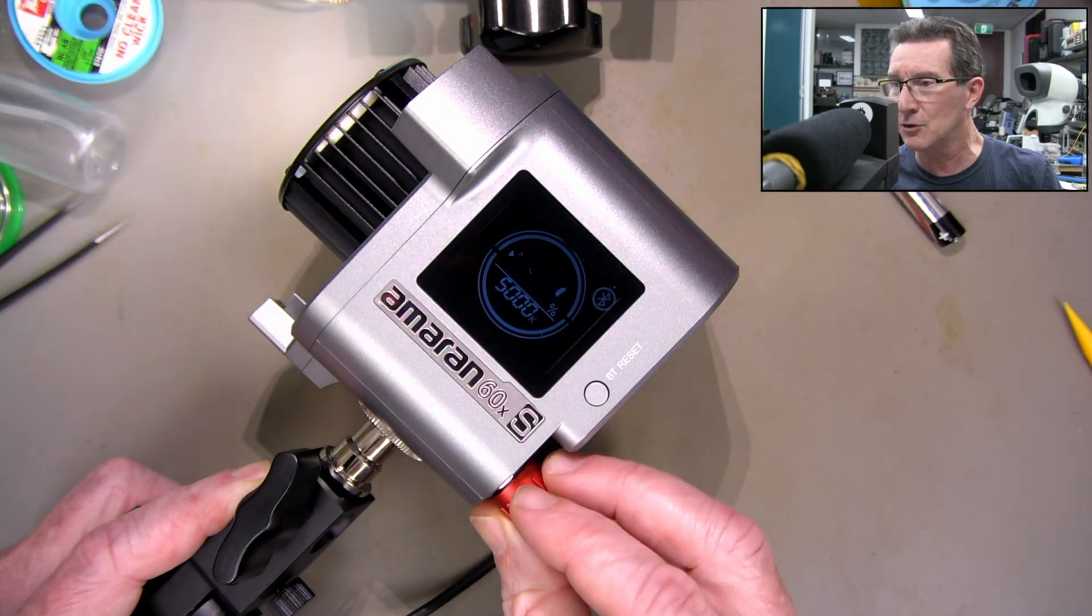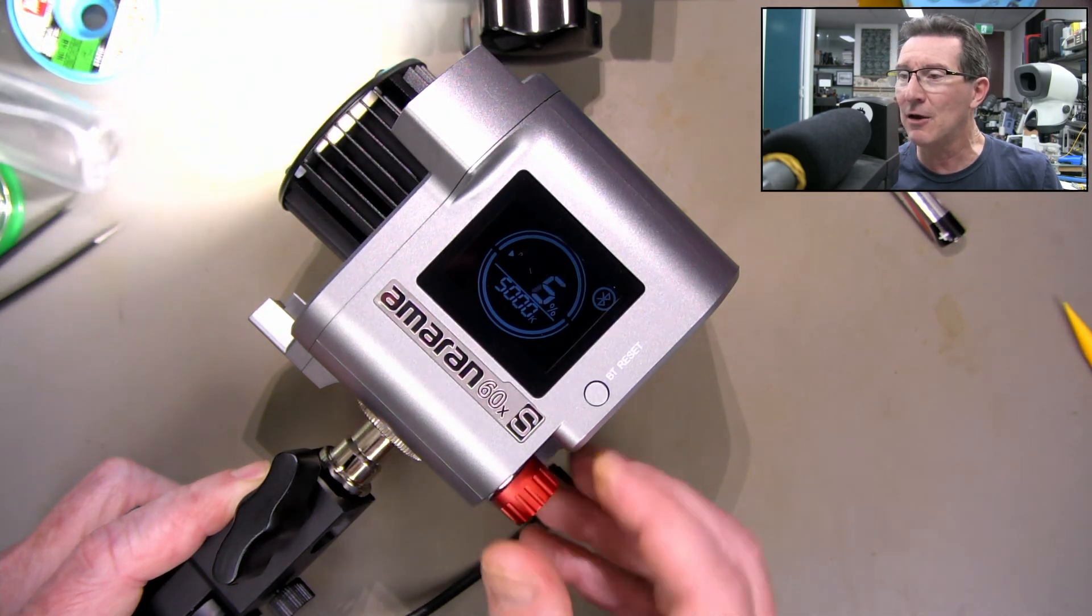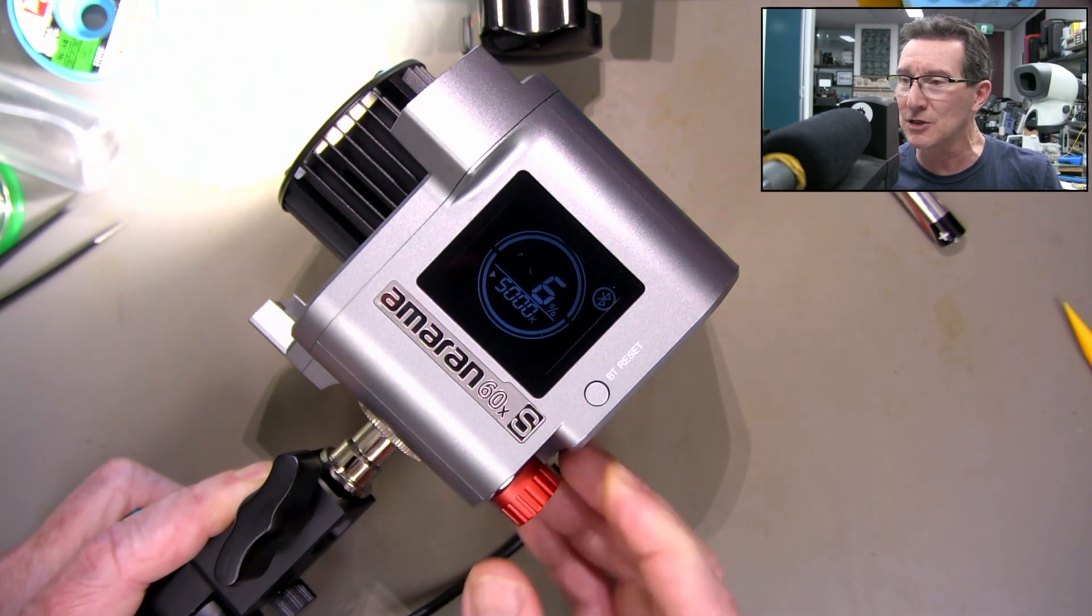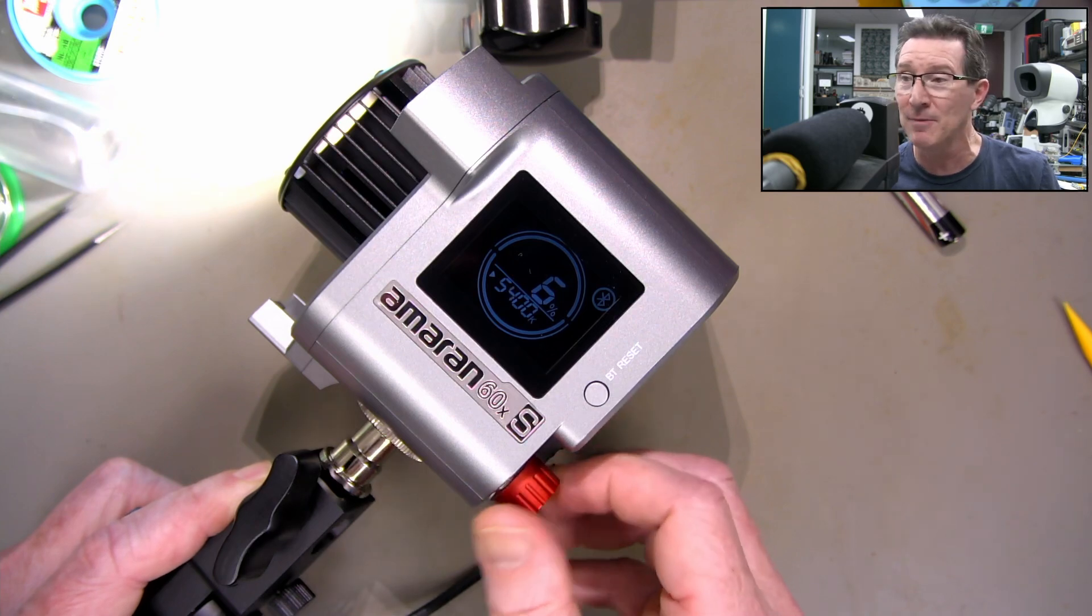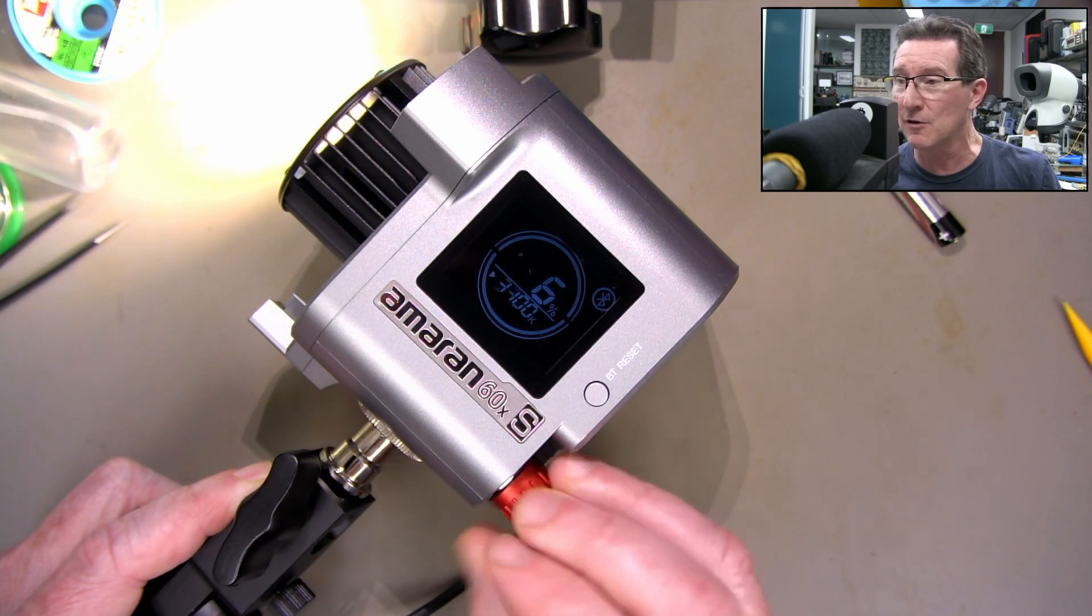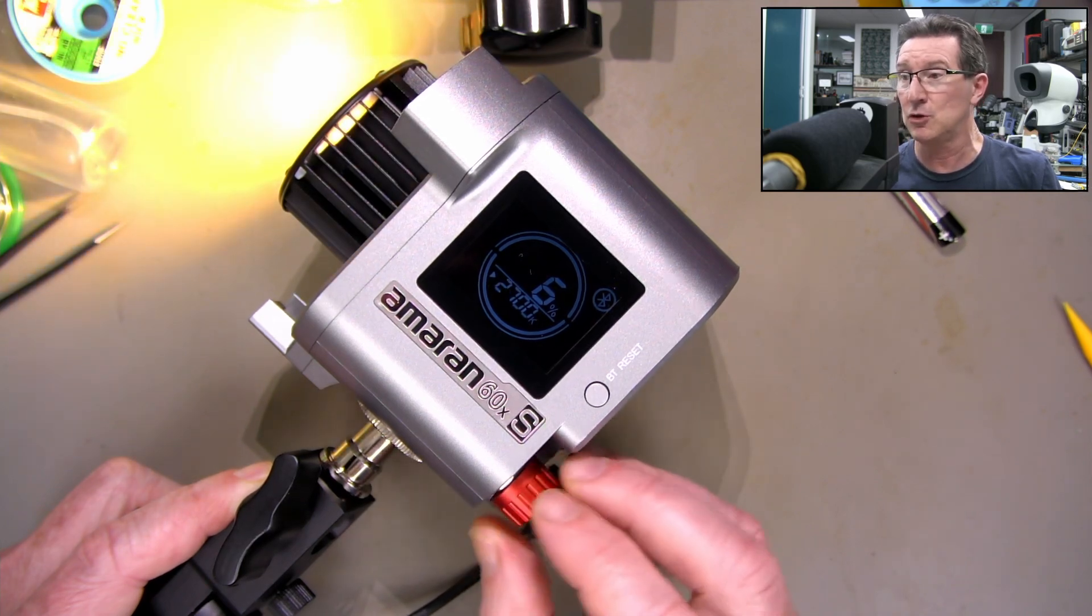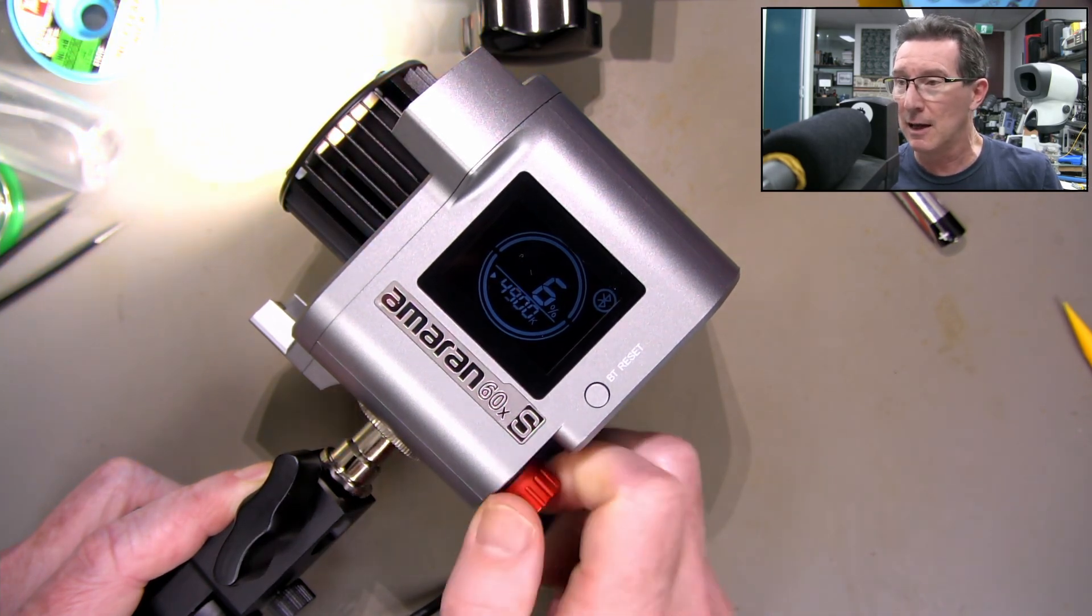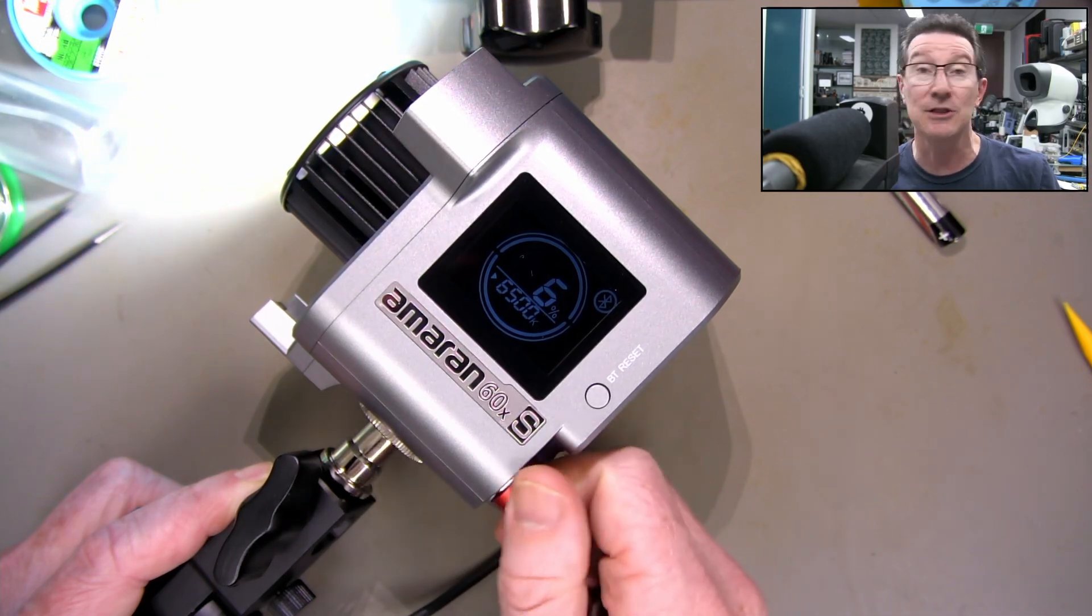And then I can go in there and I can adjust the temperature, the colour temperature, in 100 degree increments like this, from 2700 Kelvin up to 6500.